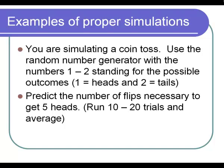Here's our first simulation. We're simulating a coin toss. We're using the random number generator with the numbers 1 representing a head and 2 representing a tail, and we want to figure out how many flips are necessary to get five heads. So we're going to set up a random integer between 1 and 2, random integers in math, and it's under probability.